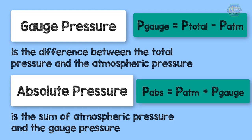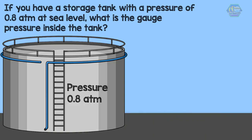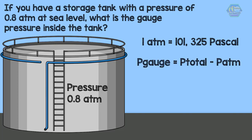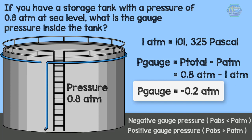For example: a storage tank has a pressure of 0.8 atm at sea level — what is the gauge pressure inside the tank? The standard atmospheric pressure is 1 atm, equal to 101,325 pascals, but since the total pressure is given in atm we use 1 atm. So the gauge pressure is 0.8 − 1 = −0.2 atm. A negative gauge pressure means the absolute pressure inside is less than atmospheric; a positive gauge pressure means it is above atmospheric.